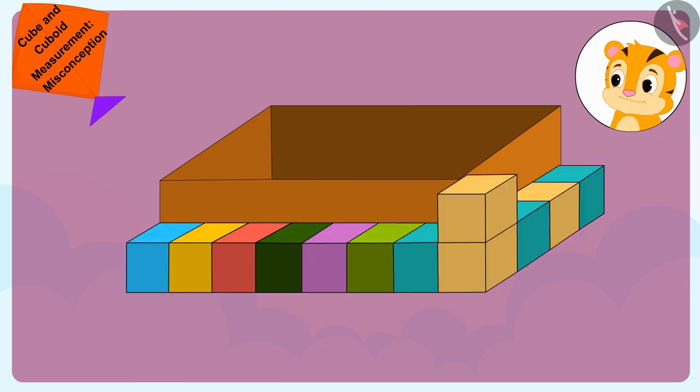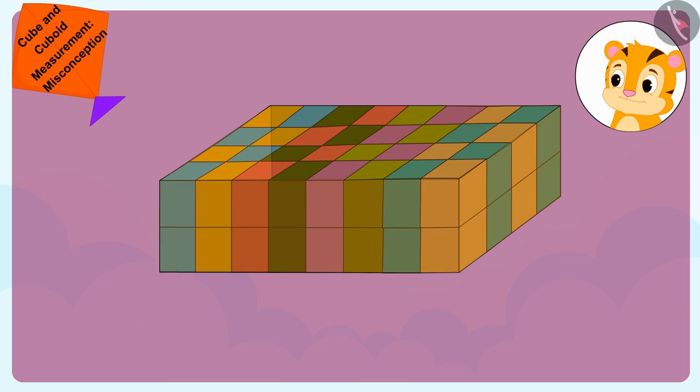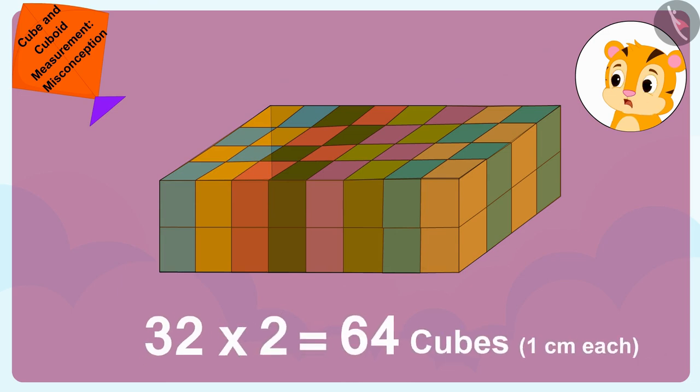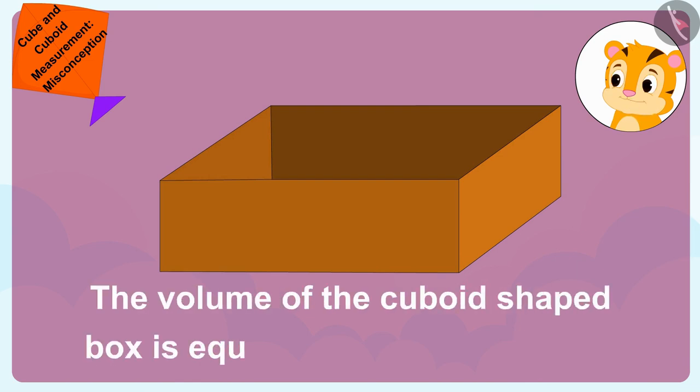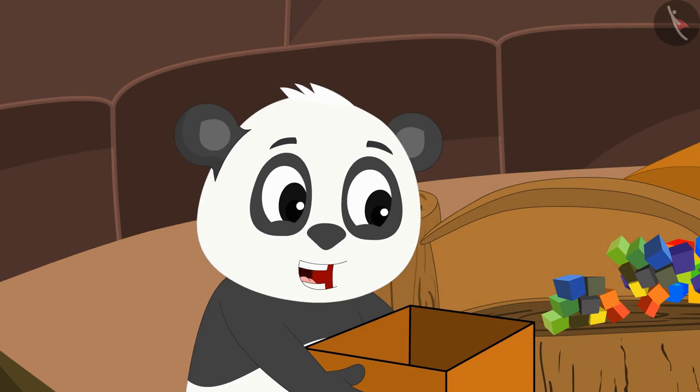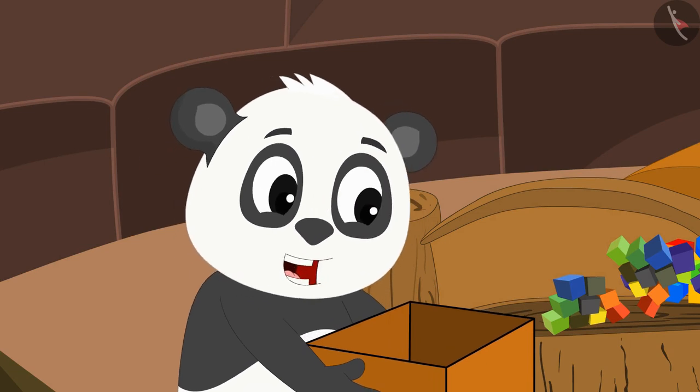That means there would be two such layers. We will be able to place a total of 32 times 2, 64 cubes of dimension 1cm each in the cuboid-shaped box. In other words, the volume of the cuboid-shaped box is equal to 64cm cubes.